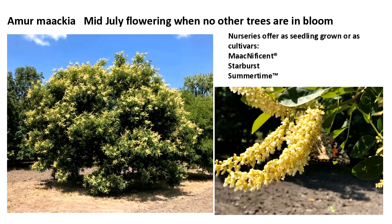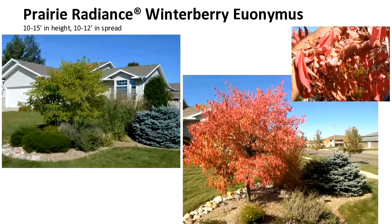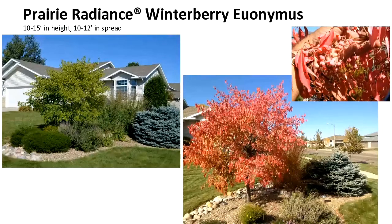I wanted to mention Prairie Radiance euonymus — not used a lot, but there are several nurseries growing it. It's a small tree out of the NDSU program and very well suited to our area. It has nice green foliage in spring, pretty non-distinct flowers early on, then turns bright red in fall. The fruit — bright red arils that open up — are shown in the upper right of the slide, and then the birds take those through the winter.